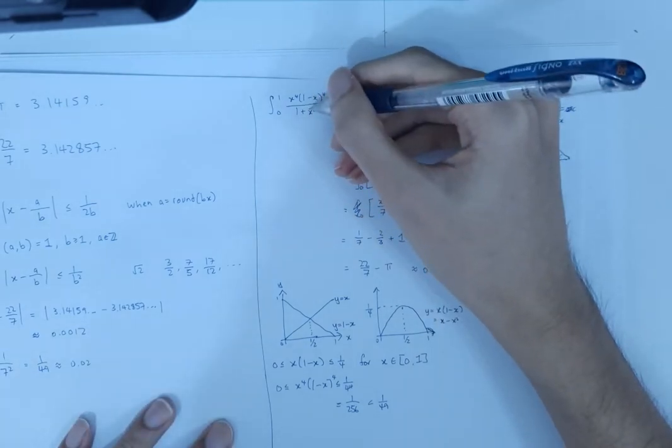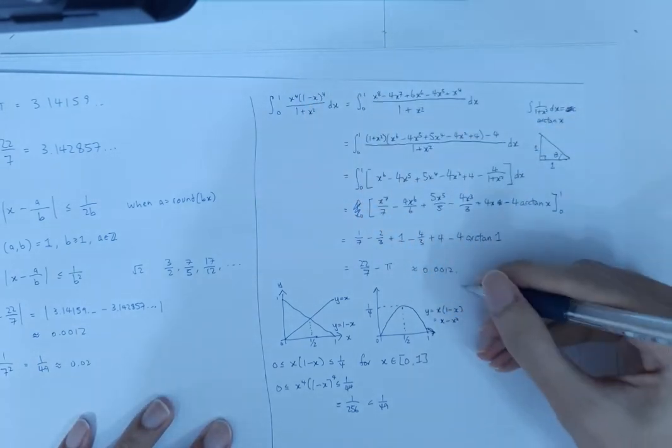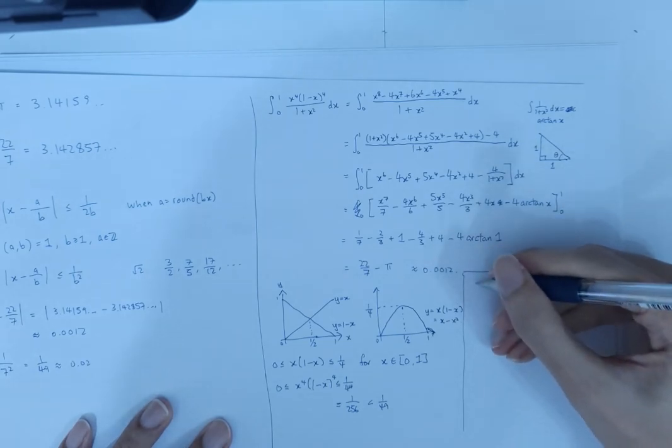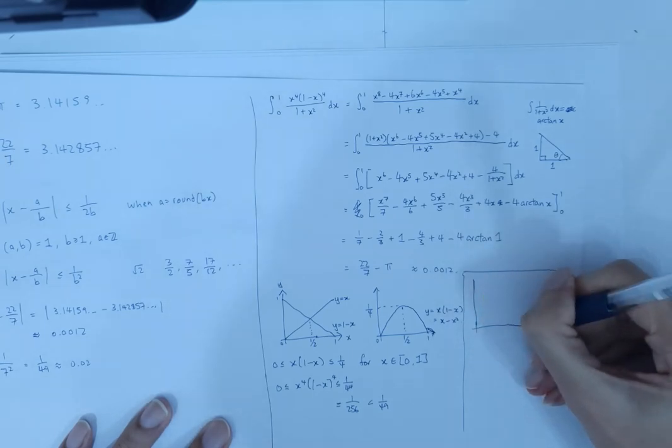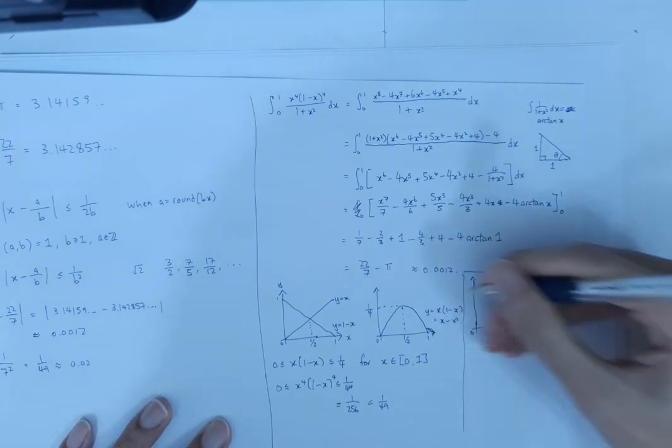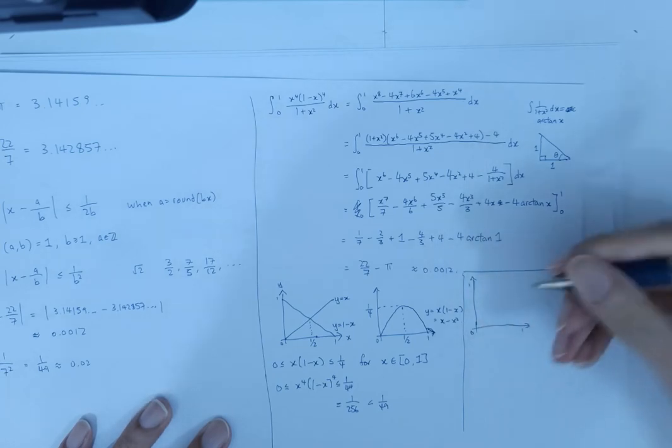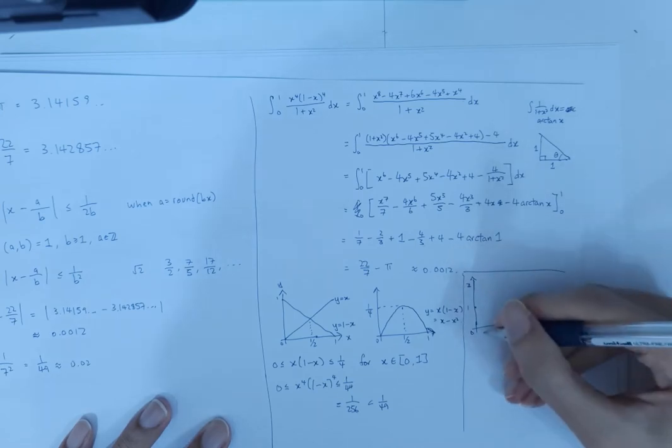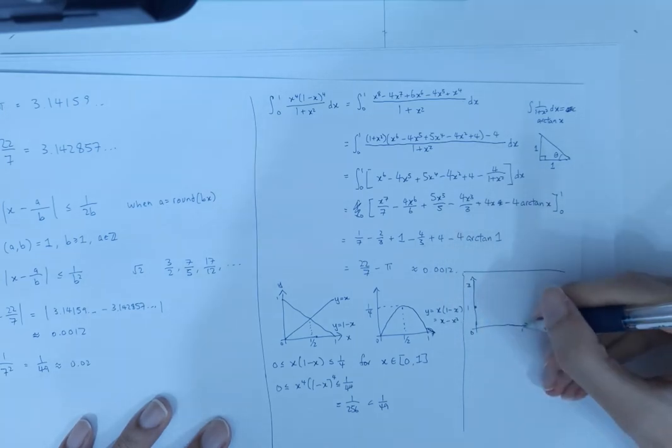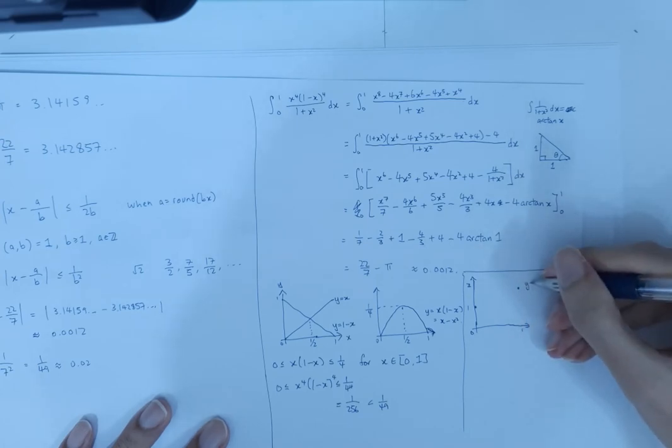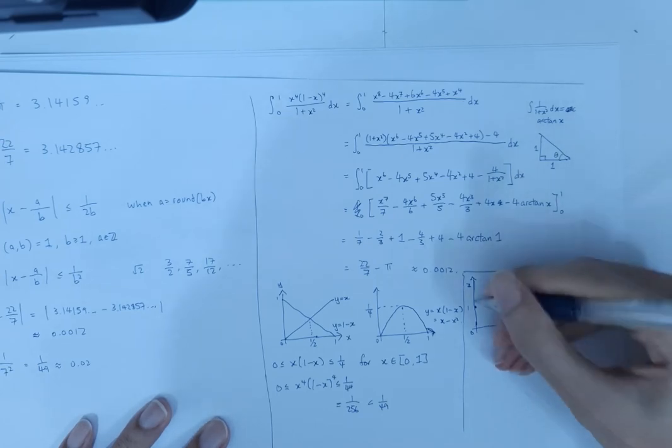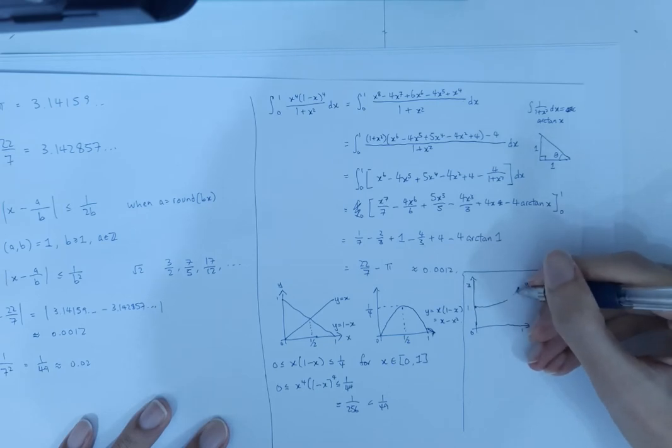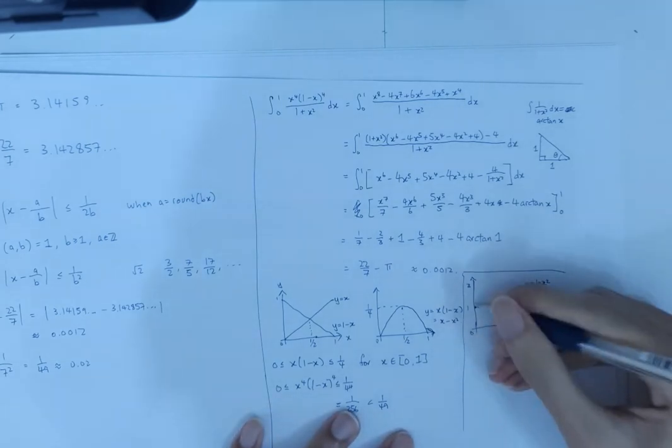And what about the denominator, 1 plus x squared? So again, we can draw a graph just for the sake of drawing graphs. Since drawing graphs is good, having some visualization often helps in knowing how things behave. So at 0, the function takes on the value of 1. At 1, the function takes on the value of 2. And it looks something like this. Probably not exactly to scale, but you get the idea. So this thing is always between 1 and 2.